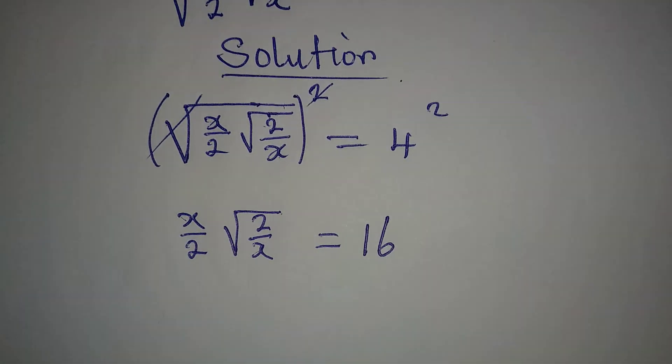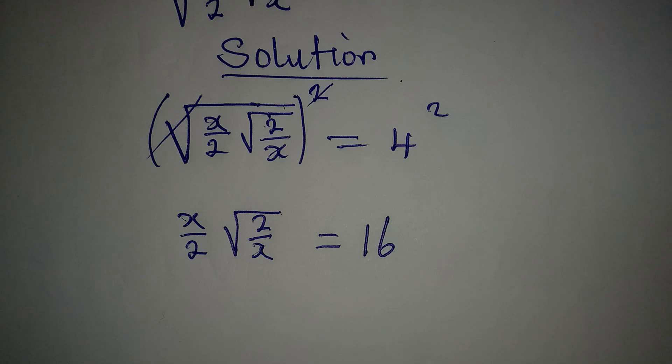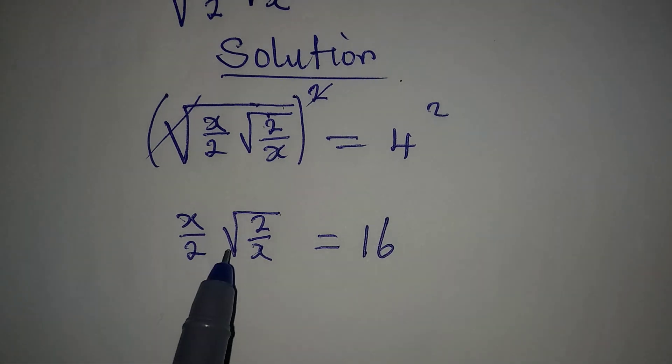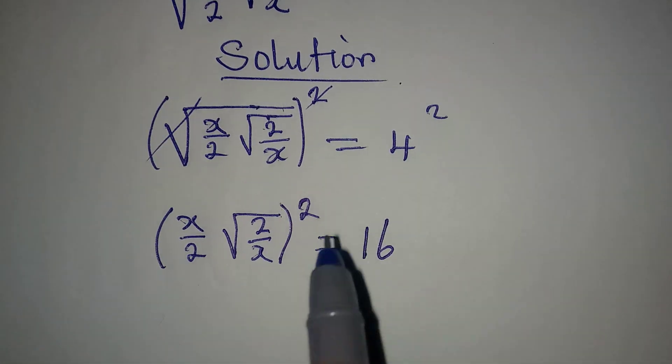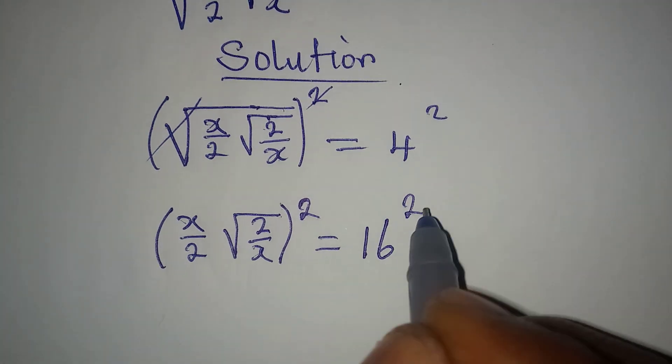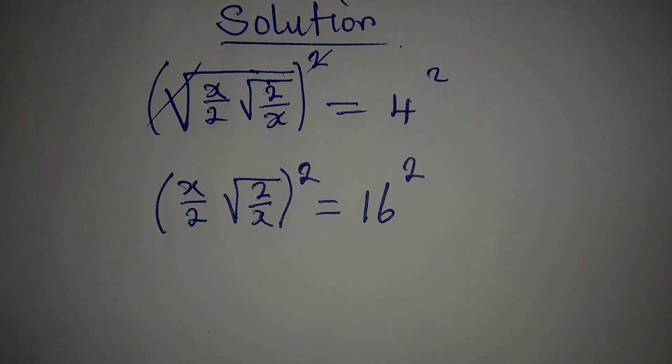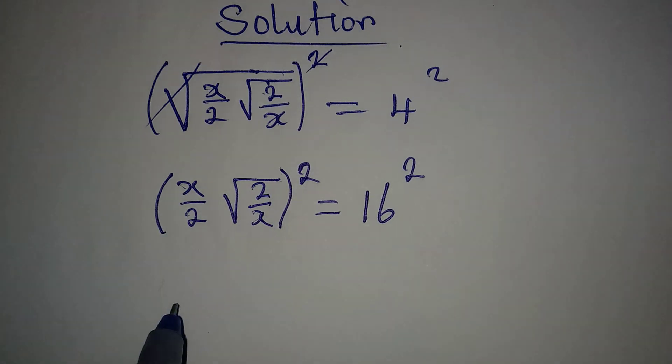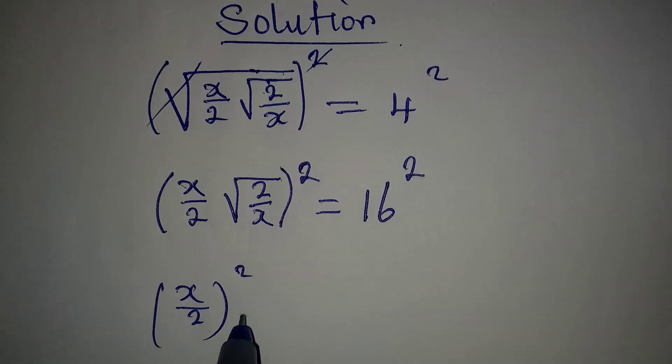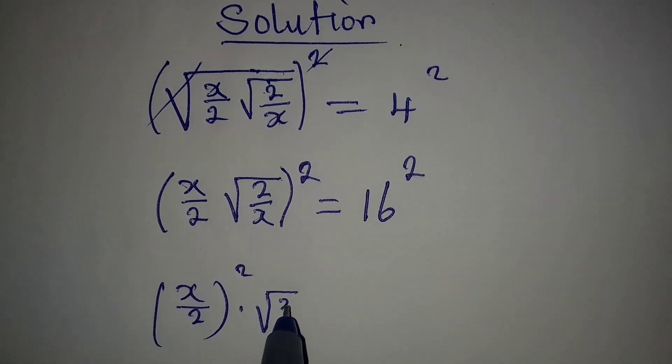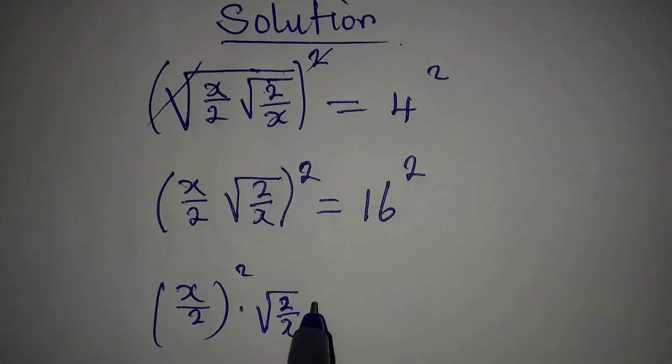Now this is not all. We still need to remove this square root from here, right? And for us to do that, there will be need for us to square both sides again because of this same square root. And then from here, x squared. Okay, this is the same thing as x over 2 both squared, then multiply by square root of 2 over x. Then this will be squared as well. This is what this means.